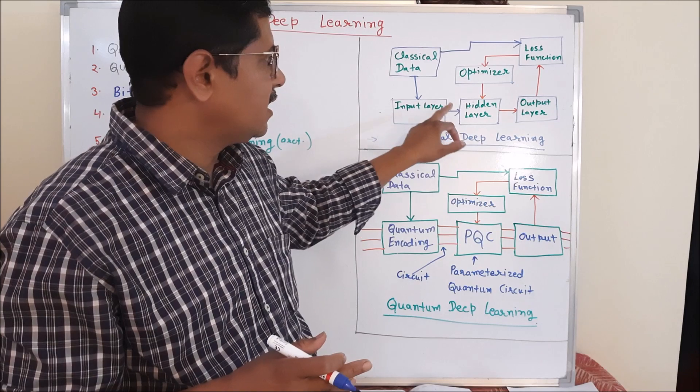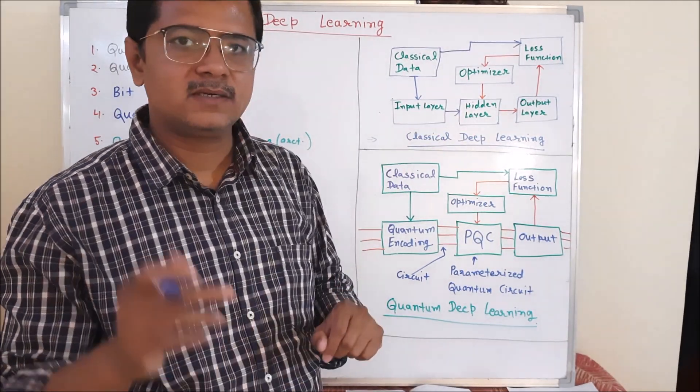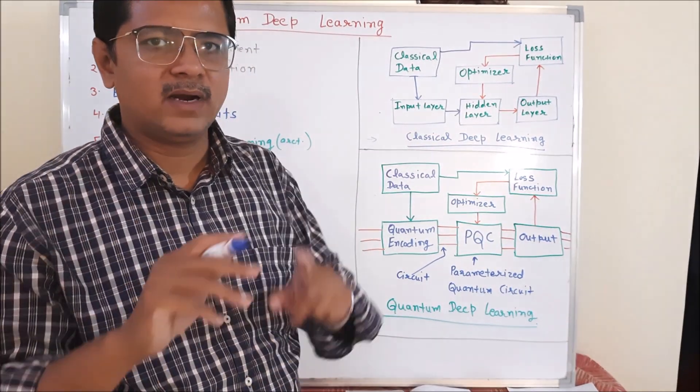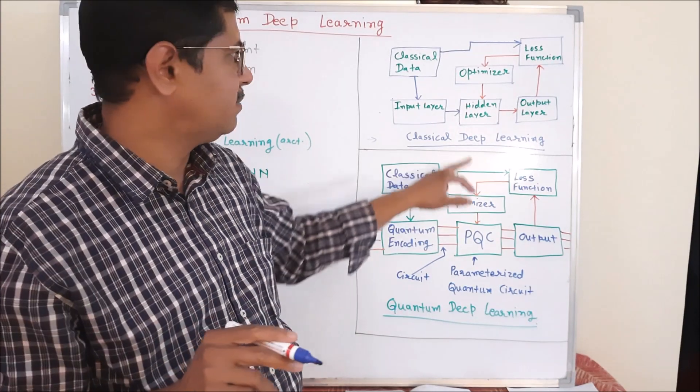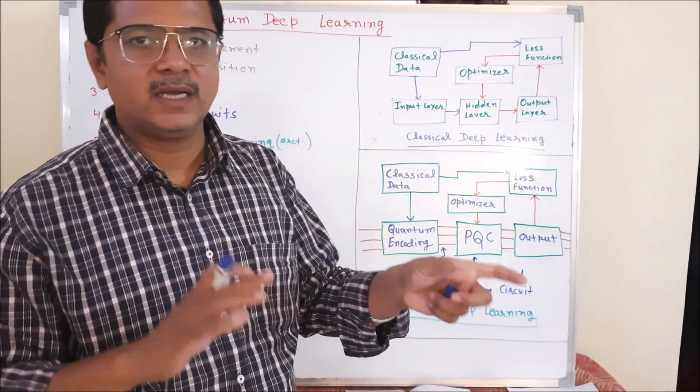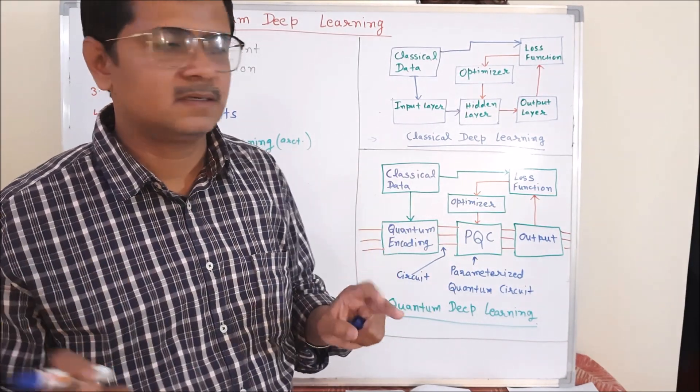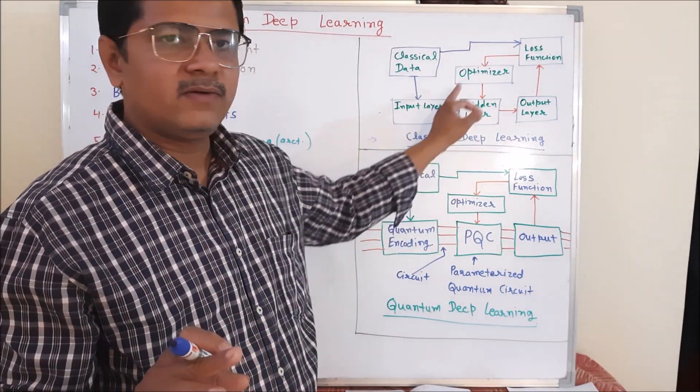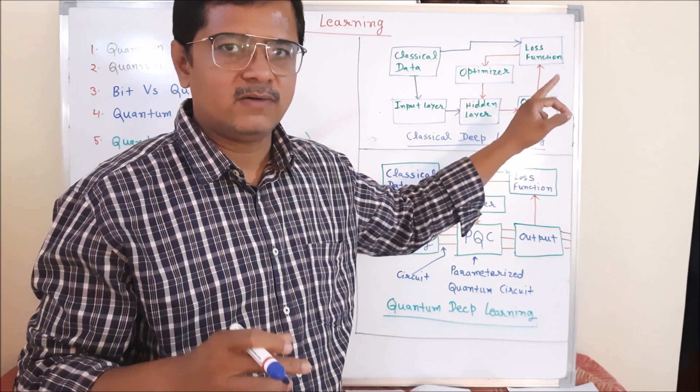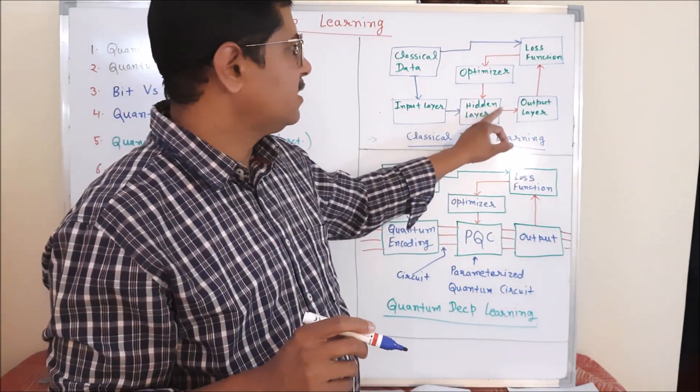After that we pass the data from input layer to hidden layer. The hidden layer is the main part, the network or architecture part of deep learning. Here we use CNN, DNN, LSTM, transformer and a lot of different things to prepare our deep learning network based on our requirements.